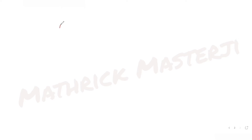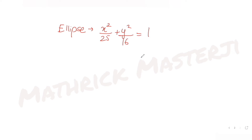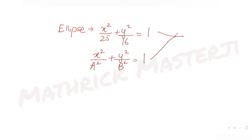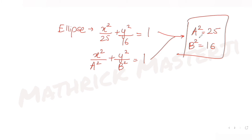To find the answer, we start with the equation of the ellipse: x²/25 + y²/16 = 1. Comparing this with the general form x²/a² + y²/b² = 1, we get a² = 25 and b² = 16.